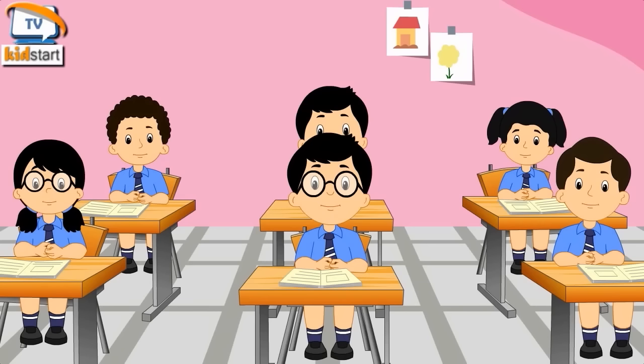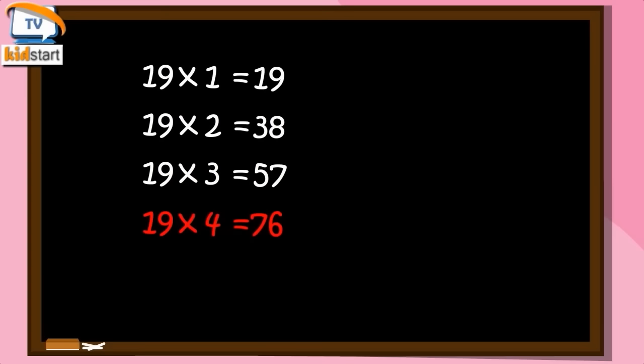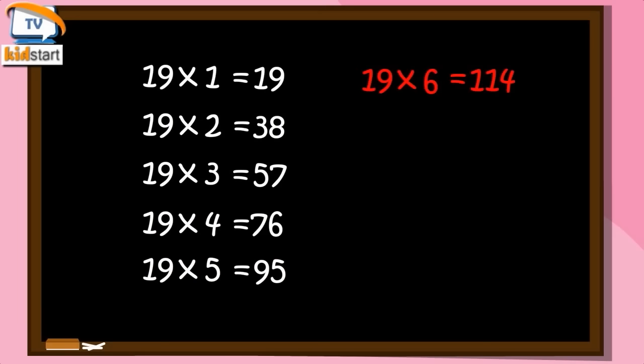Nineteen ones are 19. Nineteen twos are 38. Nineteen threes are 57. Nineteen fours are 76. Nineteen fives are ninety-five. Nineteen sixes are one-fourteen.